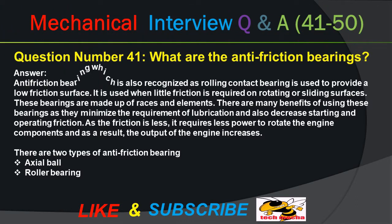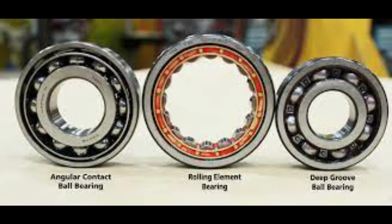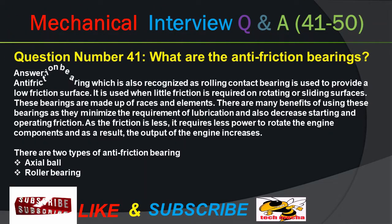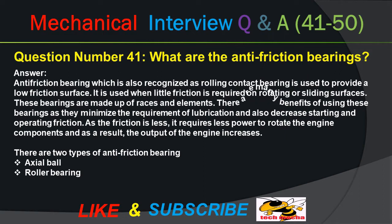Question number 41: What are anti-friction bearings? Answer: Anti-friction bearing, which is also recognized as rolling contact bearing, is used to provide a low friction surface. It is used when little friction is required on rotating or sliding surfaces. These bearings are made up of races and rolling elements. There are many benefits: they minimize the requirement of lubrication and decrease starting and operating friction. As friction is less, it requires less power to rotate the engine components, and as a result the output of the engine increases.